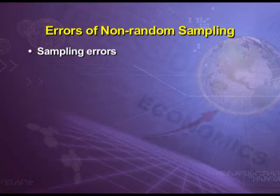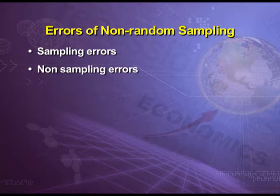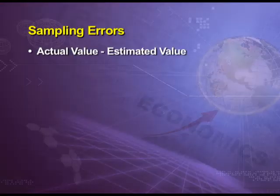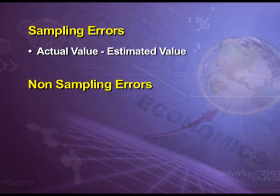Data can be collected either by census method or by sample method. There are two kinds of error which may appear while collecting data: sampling error and non-sampling error. Sampling error occurs because there is a difference between the actual value and the estimated value. Non-sampling error arises because of negligence, lack of knowledge, or forgetfulness on the part of informants. These kinds of errors can be minimized by increasing the size of sample.